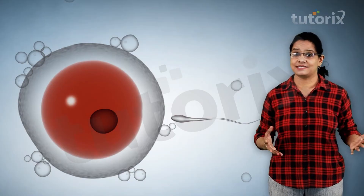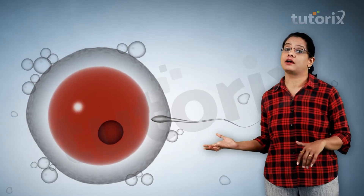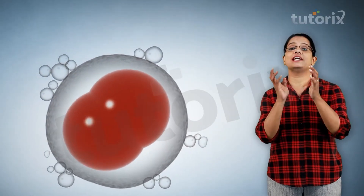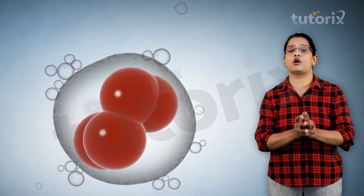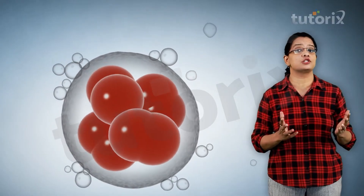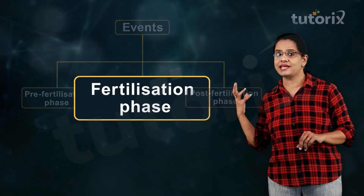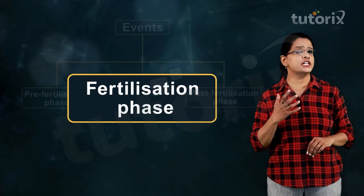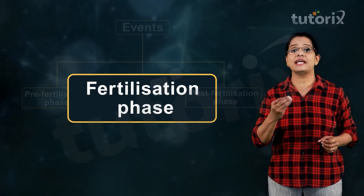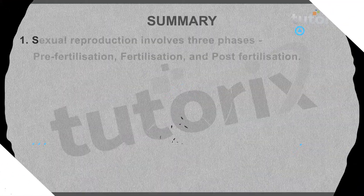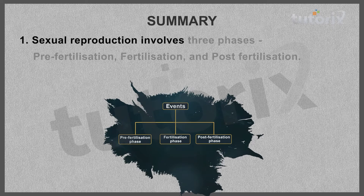Once the gametes come close to each other, fusion occurs. The fusion of male and female gametes to form a diploid cell is called fertilization — this is the next stage of the reproductive cycle, which we shall discuss in detail in the next session.